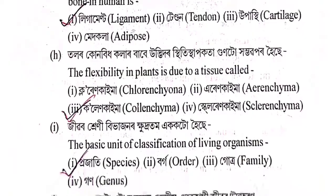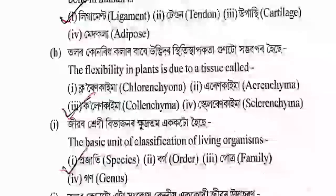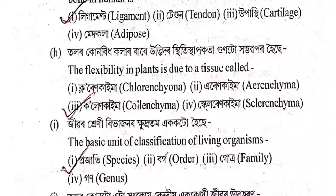Next question: Babi udhvidar sthiti sthapokota gun tu humbhappar hoi se? The flexibility in plants is due to a tissue called: chlorenchyma, parenchyma, collenchyma, or sclerenchyma? The correct answer is option 3 — collenchyma (kolenkyma).